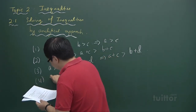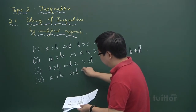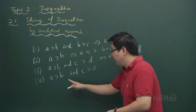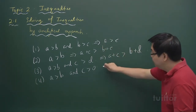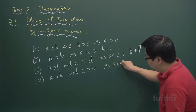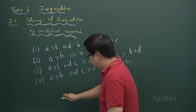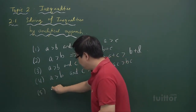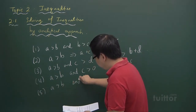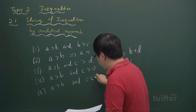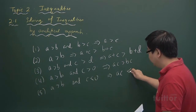The fourth and fifth properties are quite useful. If A is greater than B and C is positive, multiplying both sides of the inequality by the same positive constant C will not affect the inequality sign. However, if you multiply both sides of the inequality by a negative number, then the sign will change.